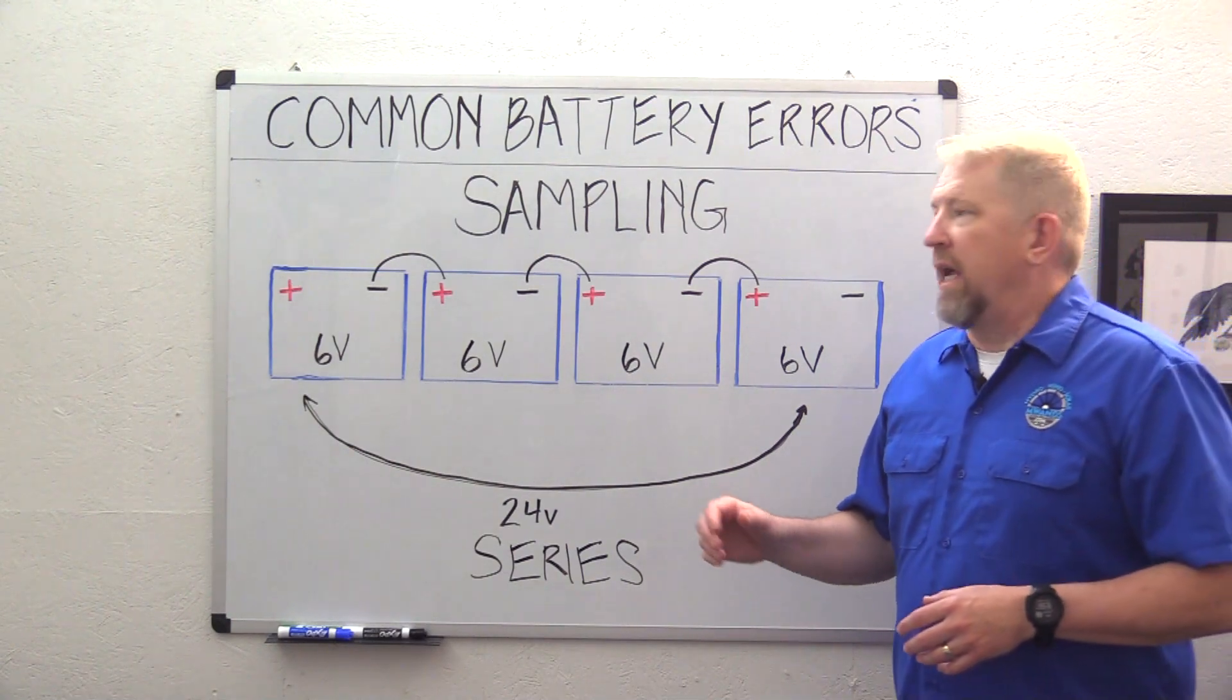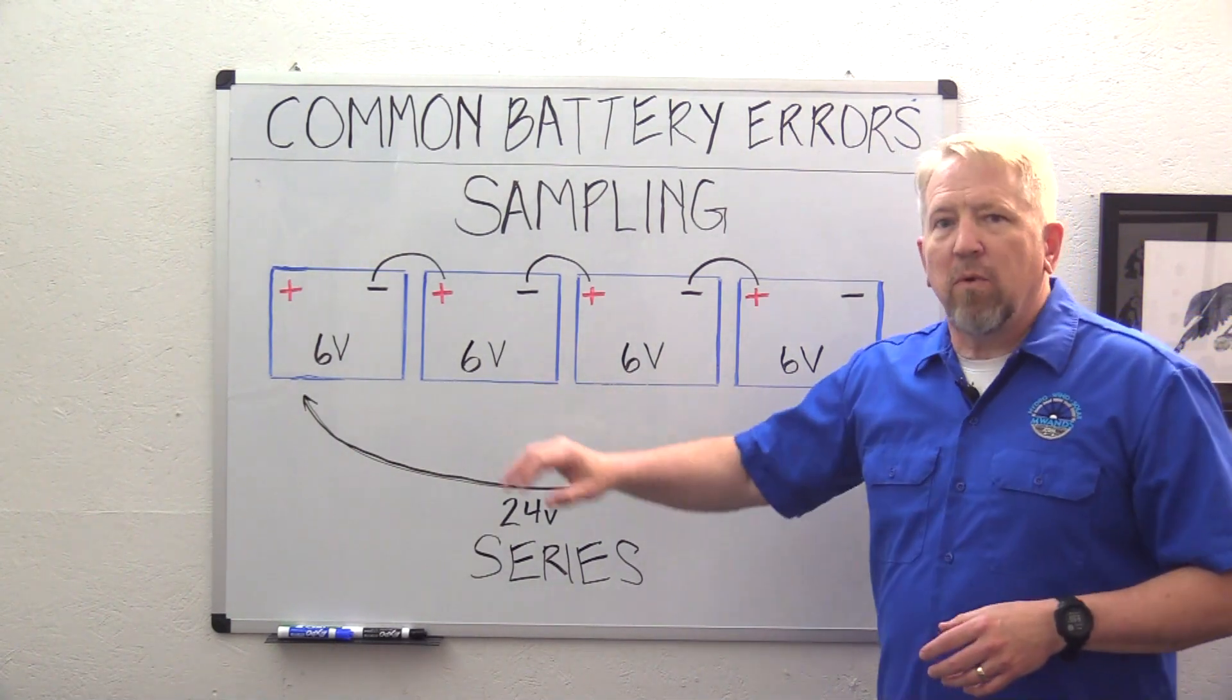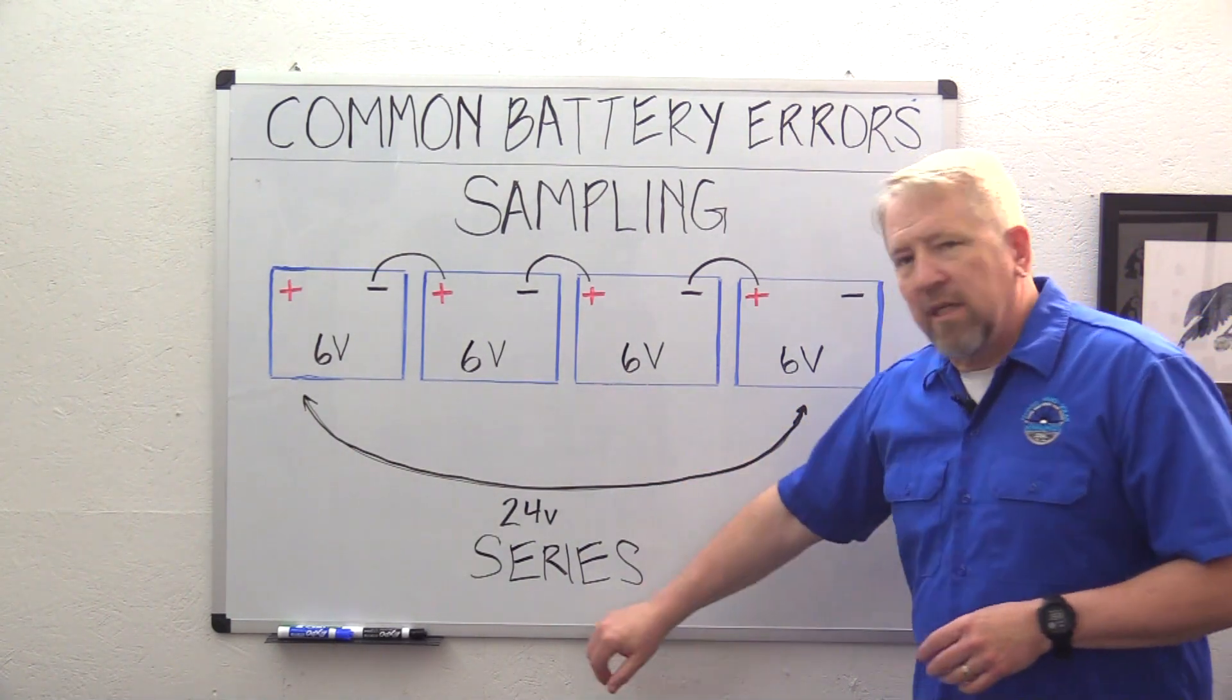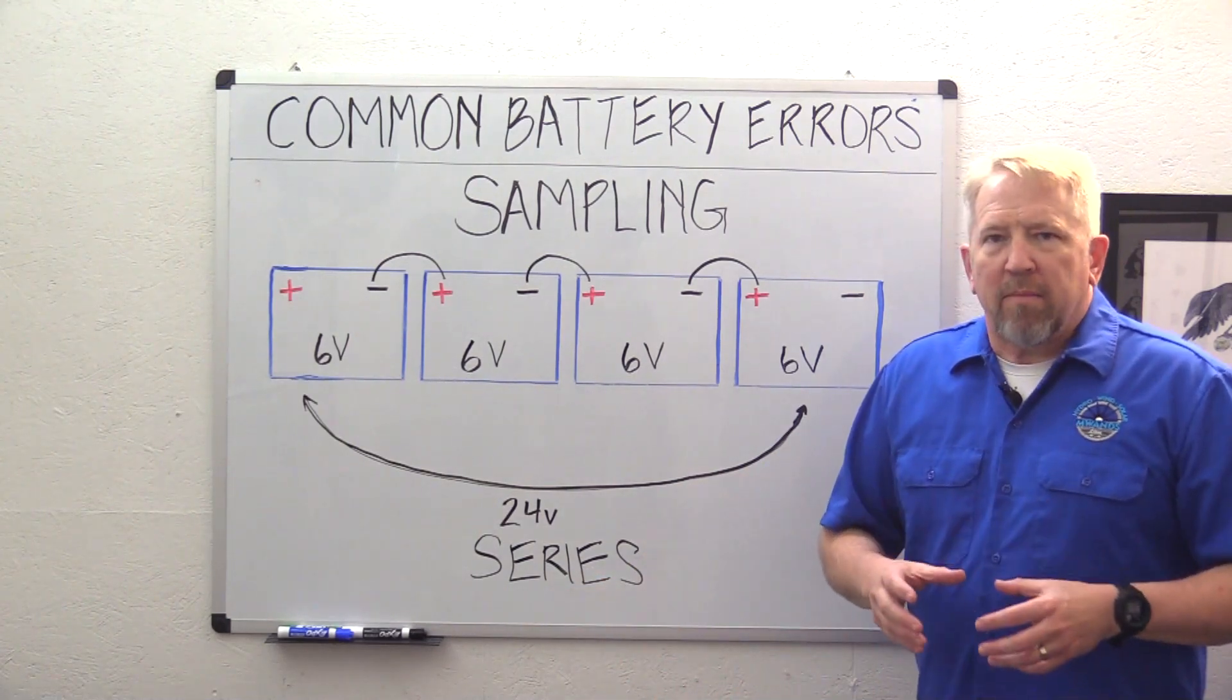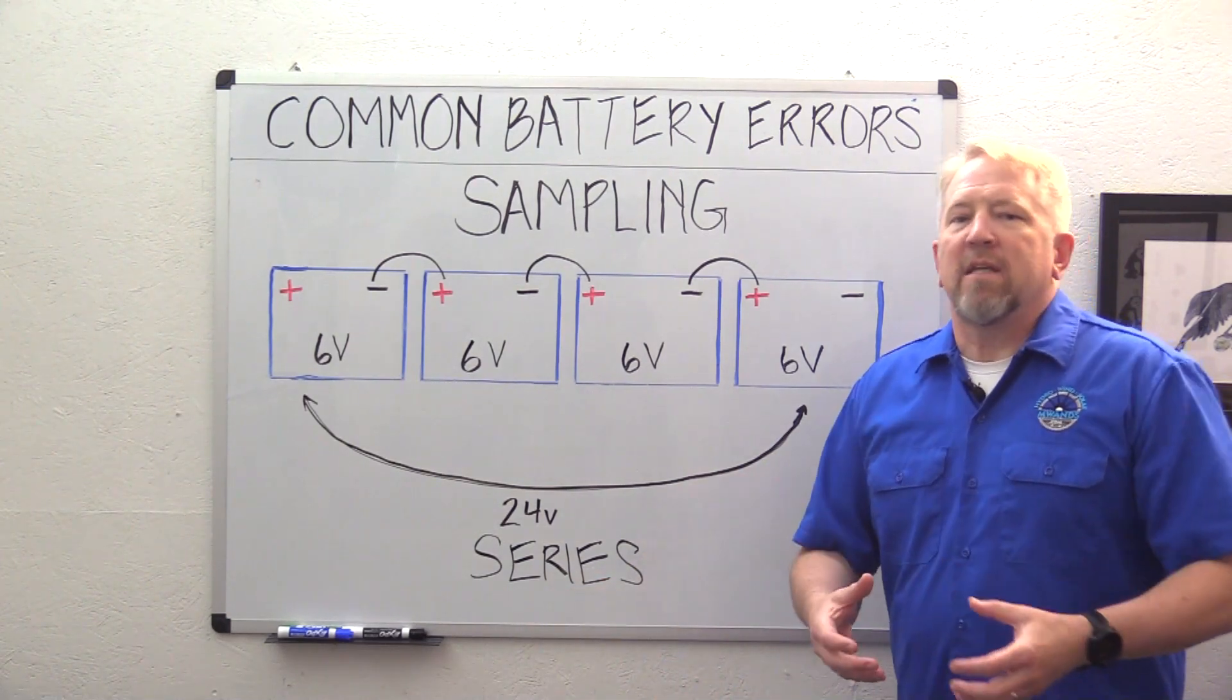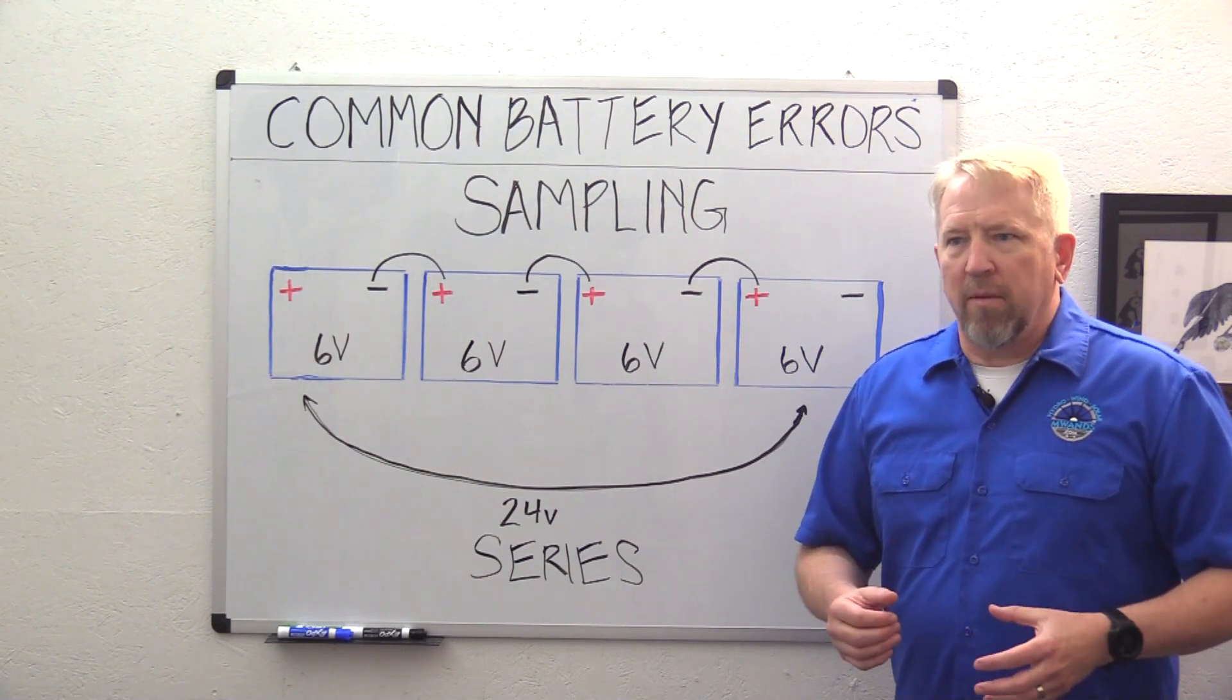What we've got up on the whiteboard today are four 6-volt batteries. They're wired in series, giving us 24 volts. When we talk about sampling, I'm going to give you an example of what we mean when we talk about sampling.